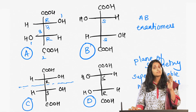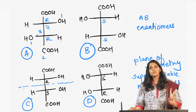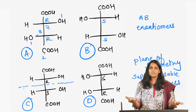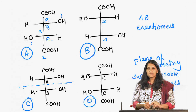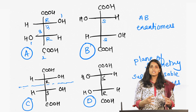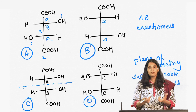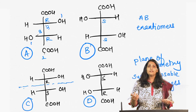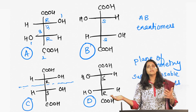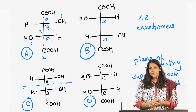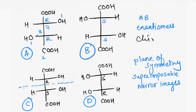Going back to tartaric acid: pure A or pure B will rotate plane polarized light, but C or D — which are really just the same meso molecule — will not rotate plane polarized light. If you take an equal mixture of A and B, a 50-50 mixture called a racemic mixture — a mixture of two enantiomers in equal ratio — it will also not show any rotation of plane polarized light, because the two molecules rotate light in opposite directions and the net result is zero. A and B are chiral, but C and D are achiral.